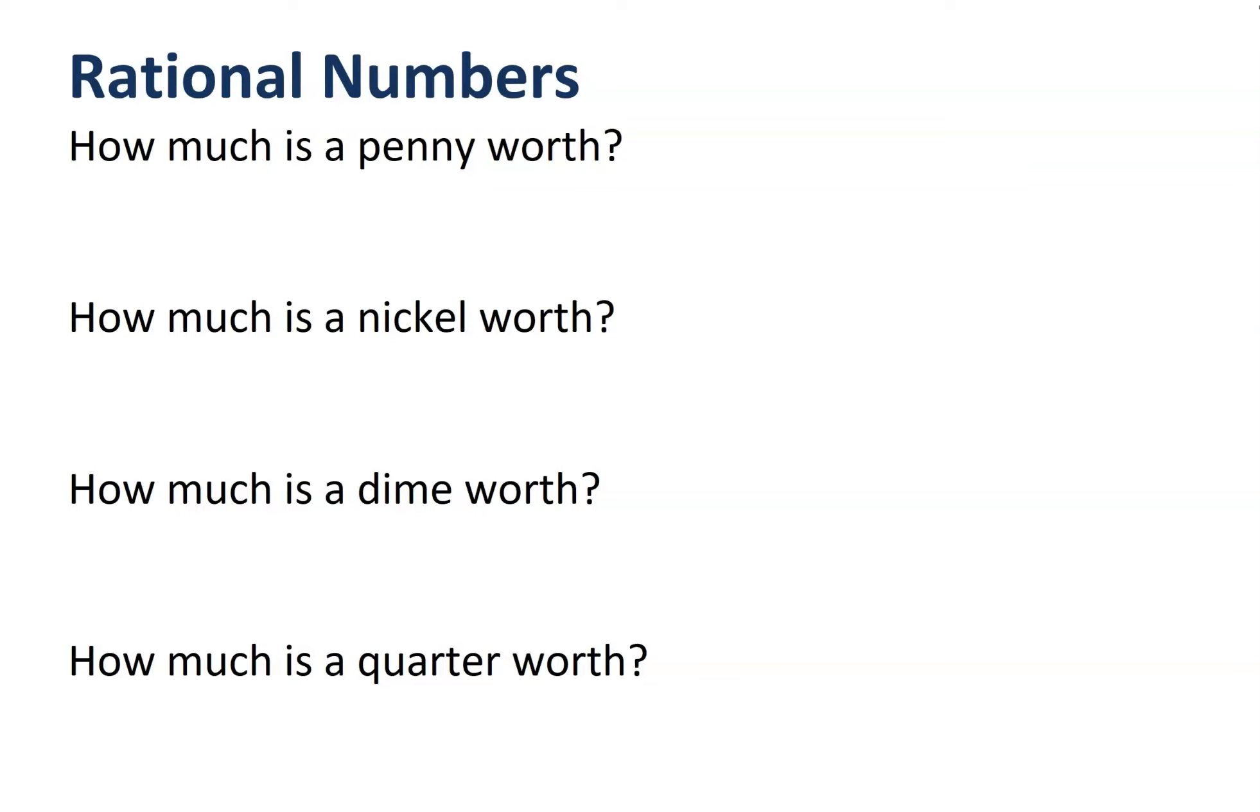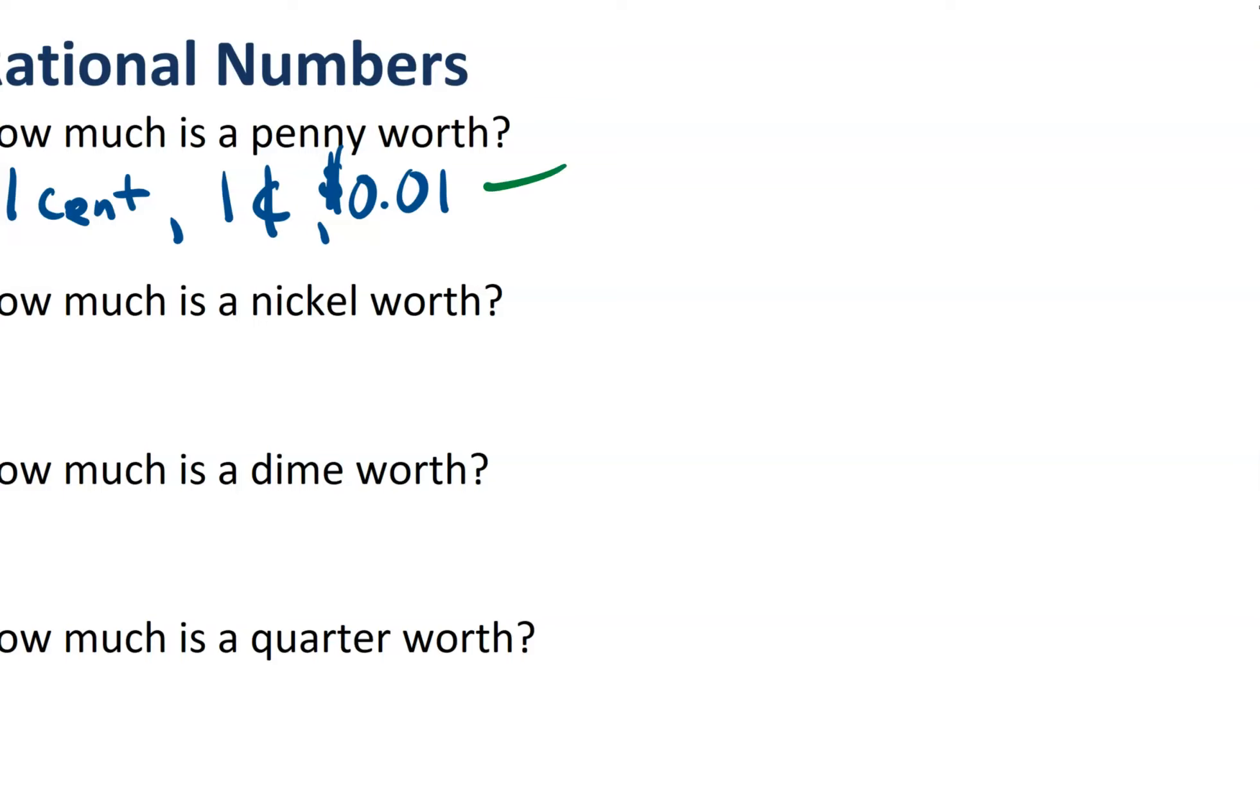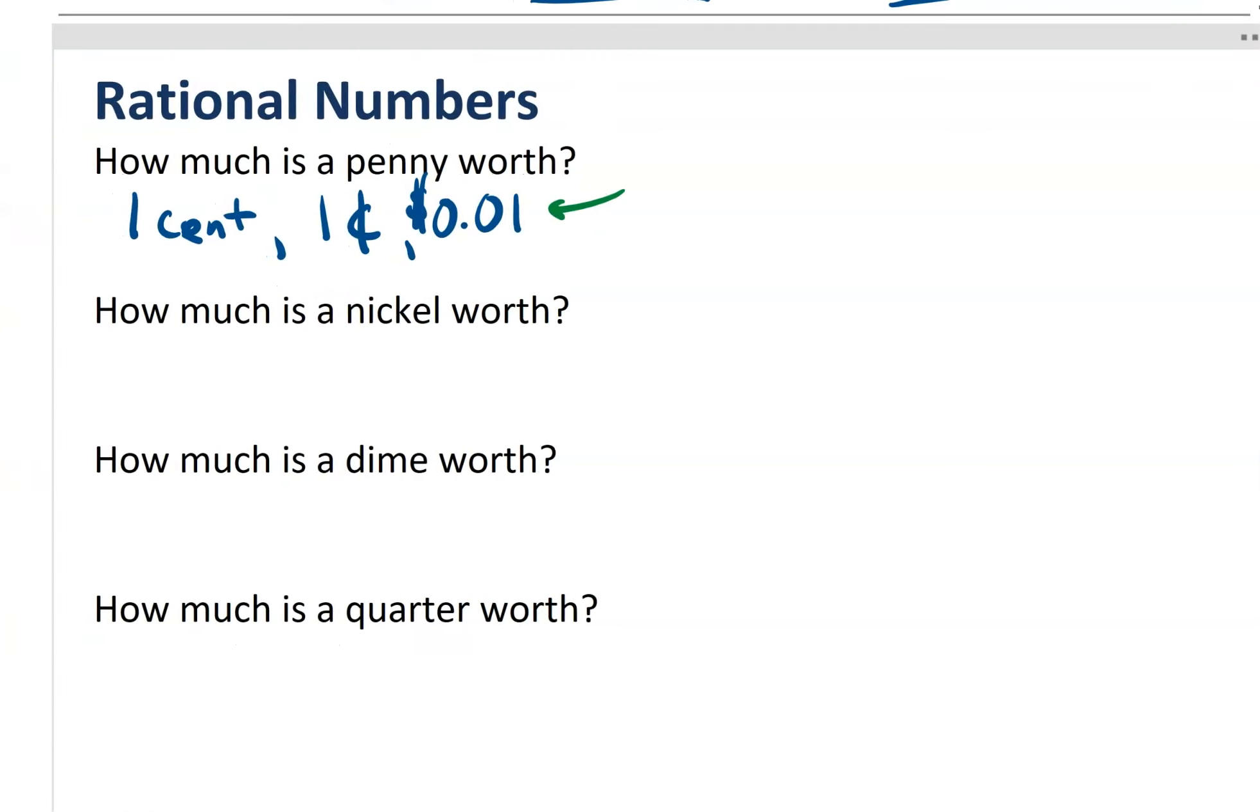When I start talking about rational numbers, I usually start by looking at money. I'll ask the question to the class, how much is a penny worth? And lots of students will come back and say that a penny is worth one cent, or they may even write a penny is worth 0.01 dollars. And all of that is perfectly fine. But this particular notion here, calling a penny worth 0.01 dollars, is pretty helpful because it actually leads us into this rational number description.